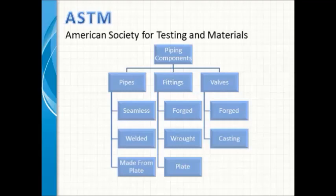Valves are made from forgings for small bore or castings for large bore — forged valves share the same ASTM as forged fittings, while cast valves have a different ASTM number. ASTM numbers also differ by material: forged carbon steel differs from forged stainless steel. When ordering a component like an elbow, specify both the material — e.g., carbon steel per ASTM A234 — and the dimensional standard — e.g., ASME B16.9.